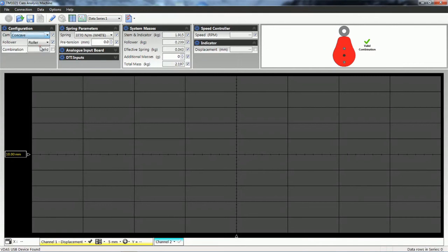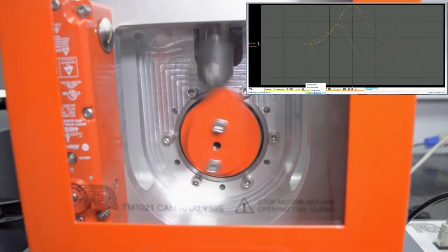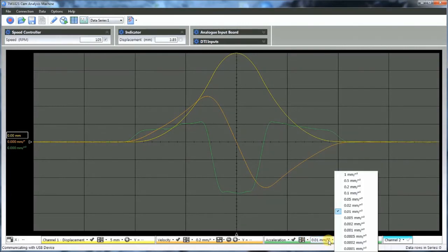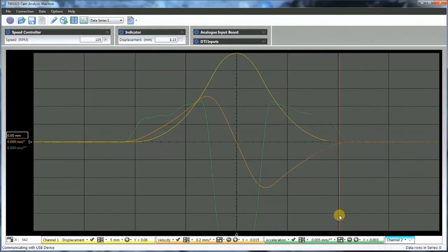The VDAS hardware and software produce live displays of follower displacement against cam rotation. VDAS also shows valid and invalid combinations of cams and followers to help with student selection. Uniquely, it also calculates and displays live plots of the first two derivatives of displacement: velocity and acceleration.